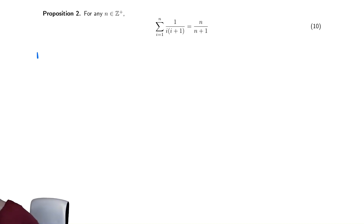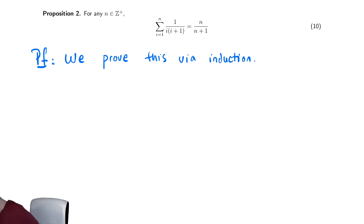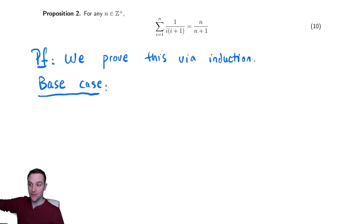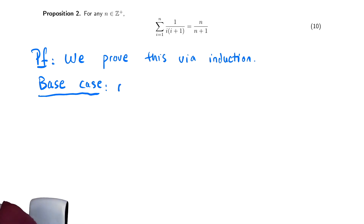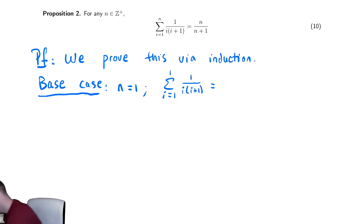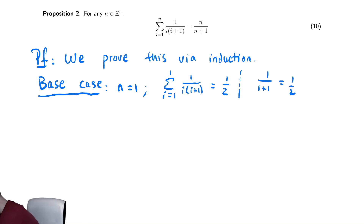Just as we did before, we're going to write that we are using mathematical induction for the reader: we prove this via induction. We must then prove the base case. Our summation starts with n as a positive integer, so our base case is n equals 1. In that case, the left-hand side becomes the sum from i equals 1 to 1 of 1 over i times i plus 1, which equals 1 over 1 times 2, which is 1/2. Furthermore, n over n plus 1 is also 1 over 2, so the base case is true.